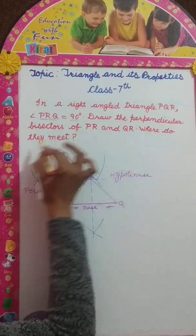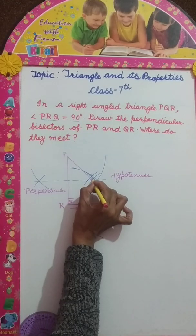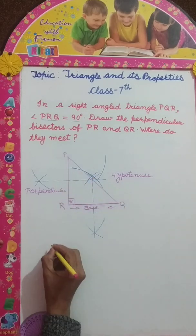Our question is, where do the perpendicular bisectors of PR and QR meet? They meet at the hypotenuse.